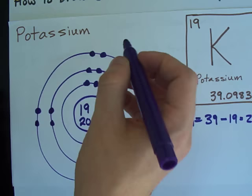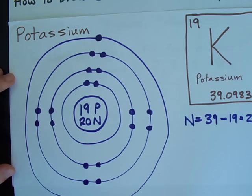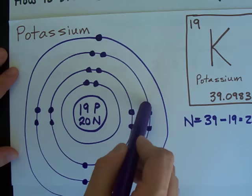I need one more. So, I draw a fourth shell, and I put a single electron in there. You can fit 2 in the first, 8 in the second, 8 in the third.